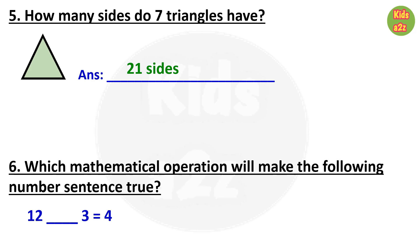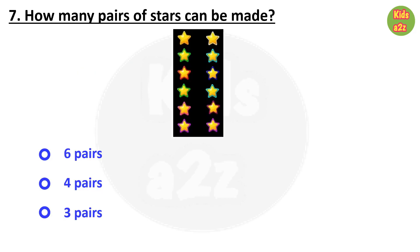The answer for Question 6 is division. We need to put the division sign because 12 divided by 3 equals 4. Question 7: How many pairs of stars can be made? The answer is 6 pairs.